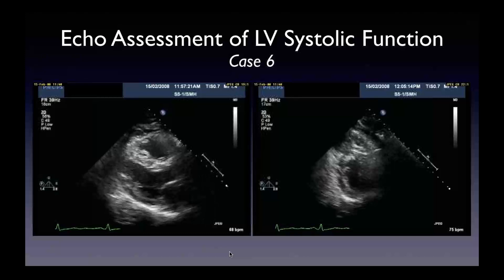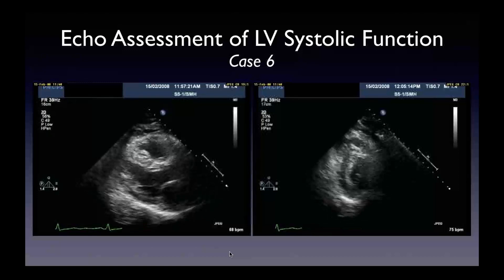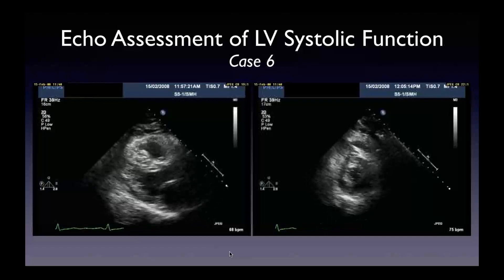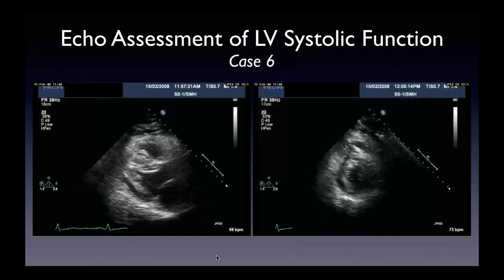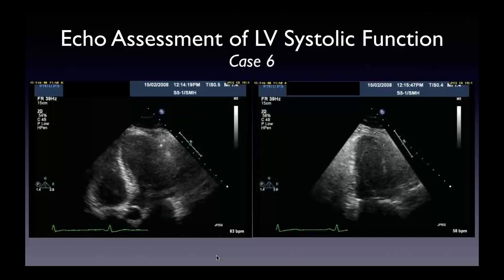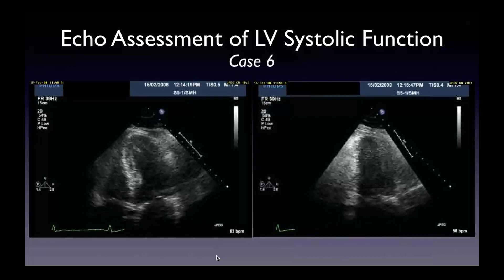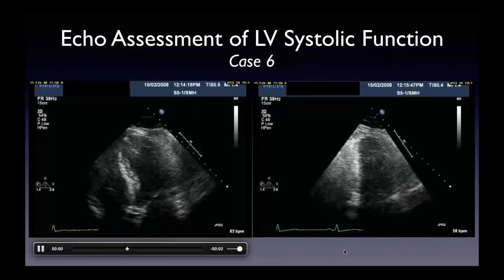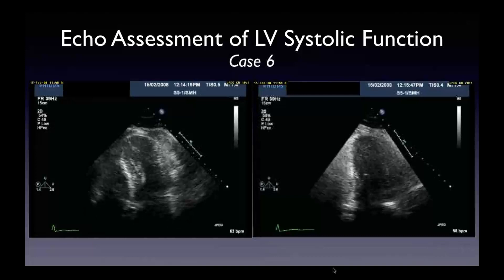A case illustrating the use of contrast for LV systolic function assessment: parasternal long axis and parasternal short axis show almost hyperdynamic systolic function with near cavity obliteration. From these views, the LV ejection fraction looks normal, probably above normal, maybe in the 65 to 70% range. But in the apical four and two-chamber views, there's a drop-off in quality of endocardial definition — the apex is not well seen, the lateral wall is not well seen, and none of the walls are really well seen.